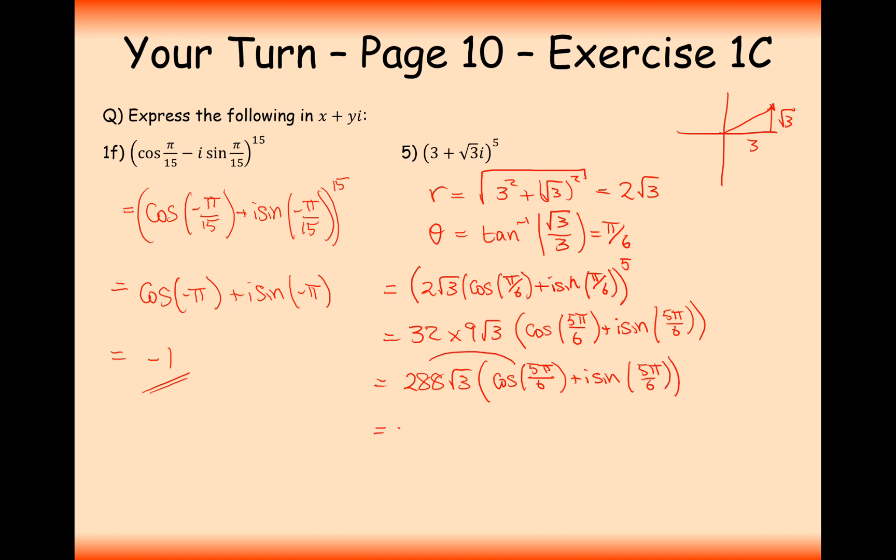Now let's expand the bracket. It'll be 288 root 3 multiplied by minus root 3 over 2, and then the sine one is going to be a half, so that would be plus one half. Let's now expand the brackets on this: it's going to be 144 times 3. 144 times 3 gives us 432. That'd be minus 432 plus 144 root 3i. Wow, there we are. That's quite a big number, but we're expecting it to be a big number because it was 3 plus root 3i to the power of 5.